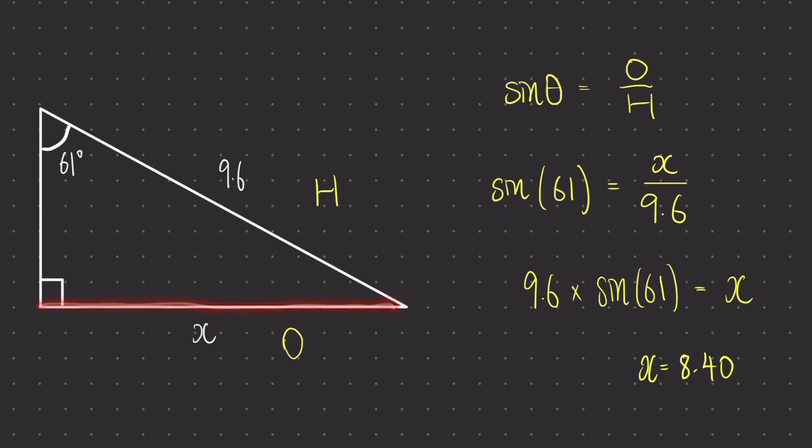This side being 8.4 makes sense in this case because it's shorter than the longest side, which is 9.6. If you ever find that you have a side of the triangle that is not the hypotenuse as the longest, then something must have gone wrong with the question. So that's just an extra step you can take to check your answer.